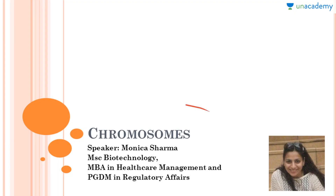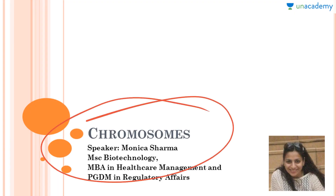Hello friends, today we'll be discussing about chromosomes, and in this lesson I'll be clearing your doubts related to certain terminologies like chromosomes, chromatids, genome, base pairs, and what is a gene. I have found that most students are very confused about these terminologies whenever they read something in the textbooks — somewhere it is written genome, somewhere chromosome, somewhere base pair, somewhere DNA — so why all these terminologies are being used at different places and at different times.